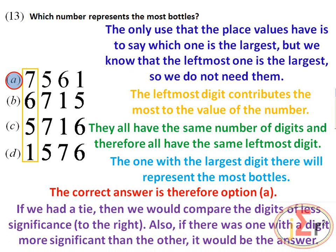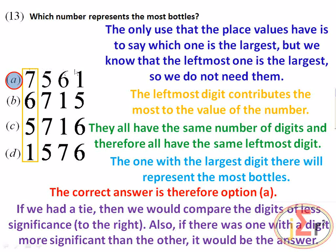If we had a tie, we would compare the digits of less significance, located to the right. Also, if there was a number with a digit more significant than the others, it would be the answer. For example, if we had another number with five digits and all digits are non-zero, that five-digit number would automatically be the largest.